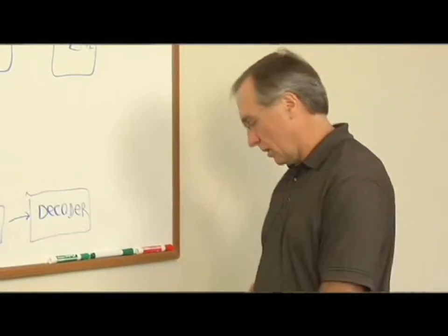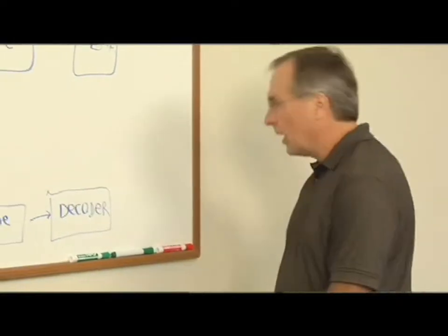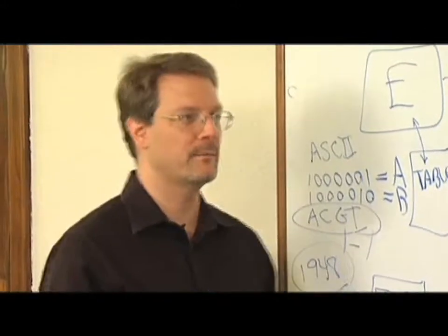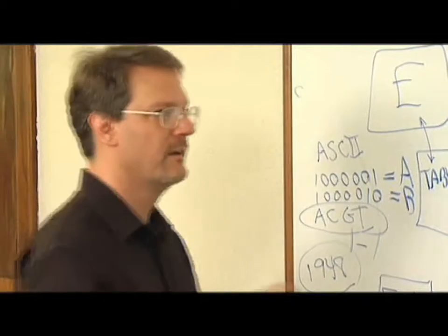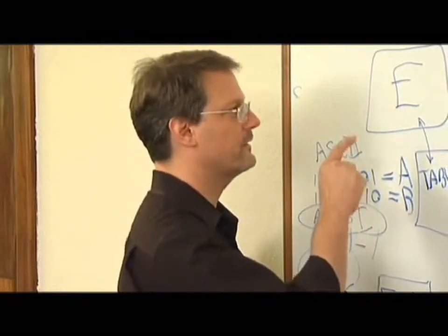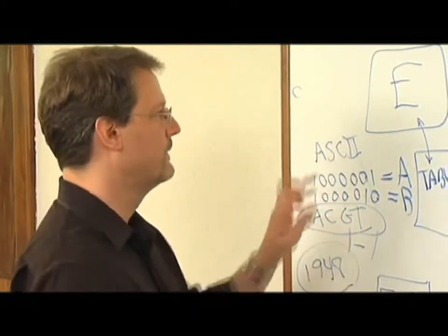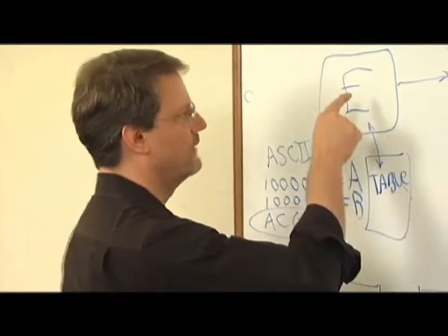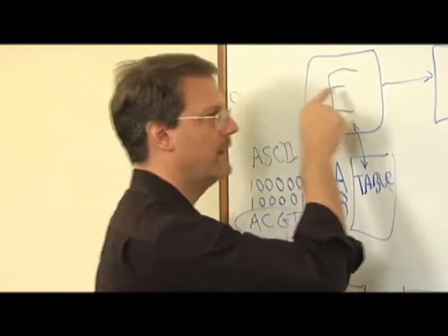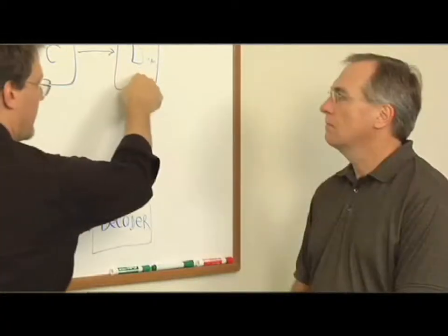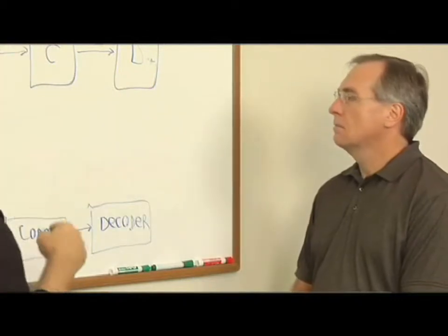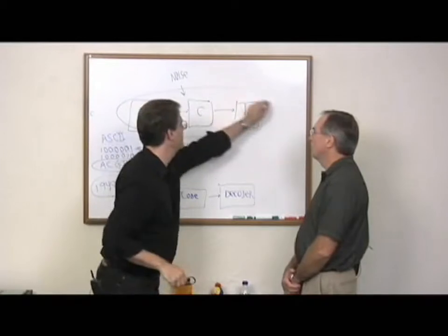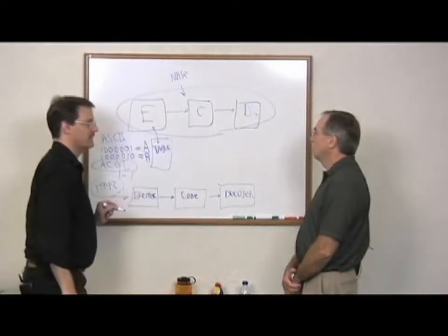Say more about codes. What is a code and how does that apply? A code is a system of symbols for communication. Specifically, a code is a symbolic message that is exchanged between an encoder and a decoder. The communication does not take place until you have all three of these things.